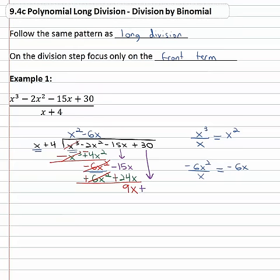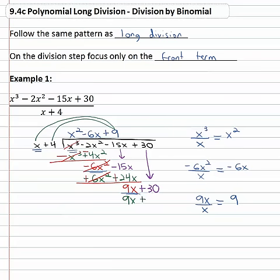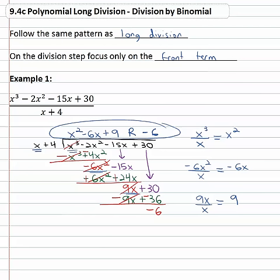Bring down the next term, plus thirty, and repeat the process. Divide the front term nine x by the front term of x — the x divides out, leaving positive nine. Multiply nine by the divisor: nine times x is nine x, and nine times four is thirty-six. Change the signs on both terms: nine x becomes negative and thirty-six becomes negative. The nine x's subtract out, and thirty minus thirty-six is negative six. Nothing left to bring down, so we have a remainder of negative six. Dividing these polynomials gives us x squared minus six x plus nine with a remainder of negative six.